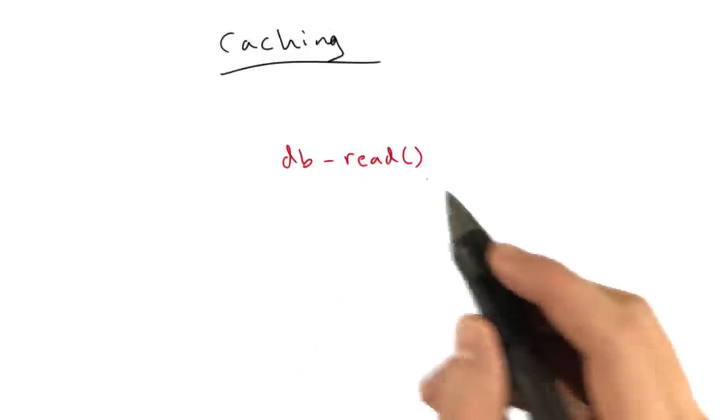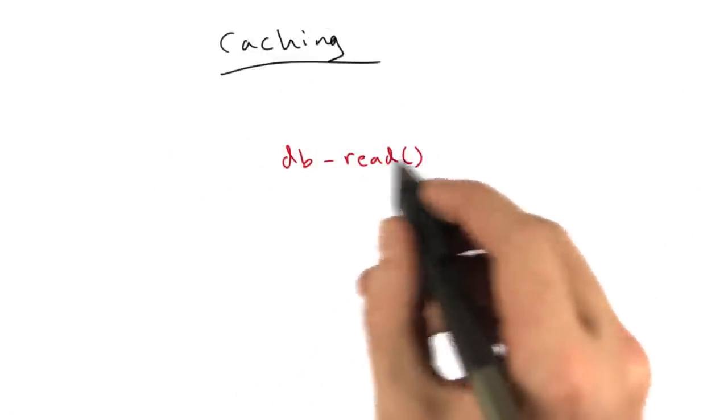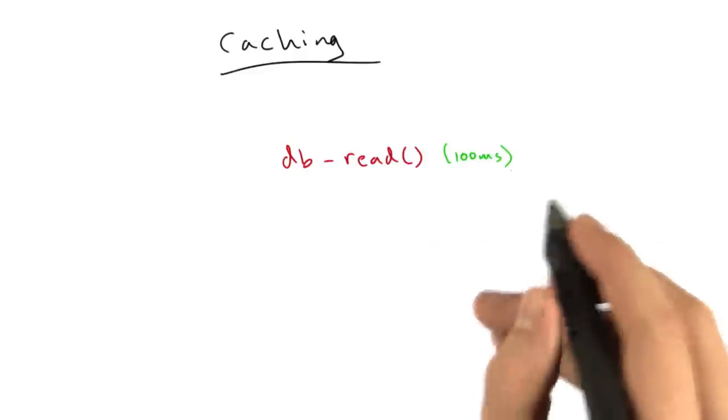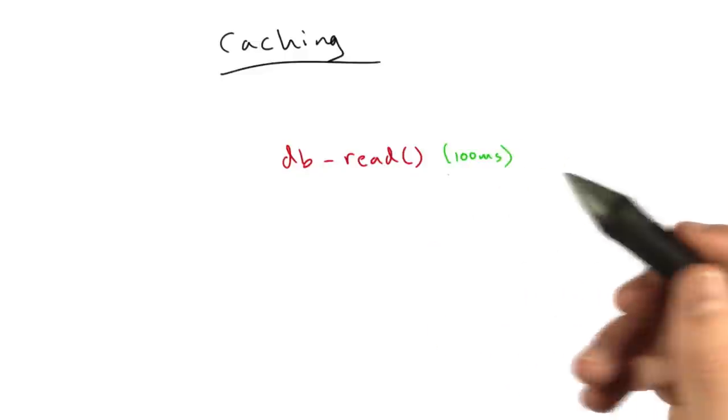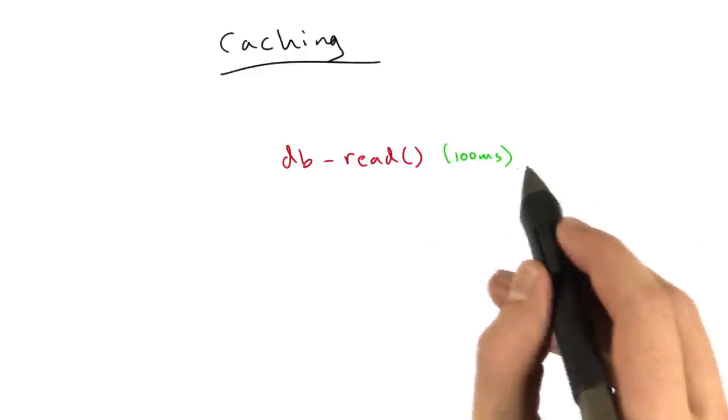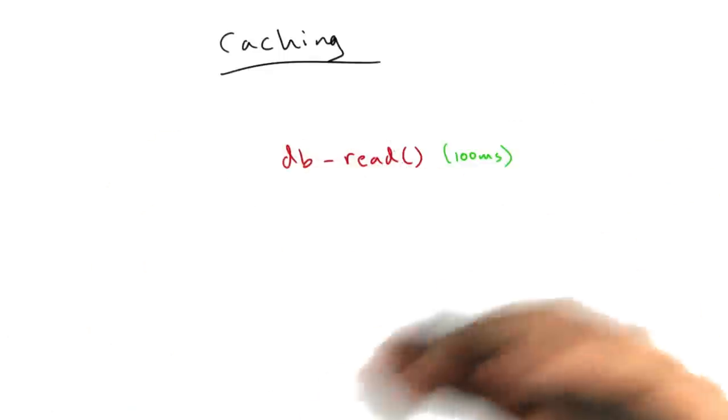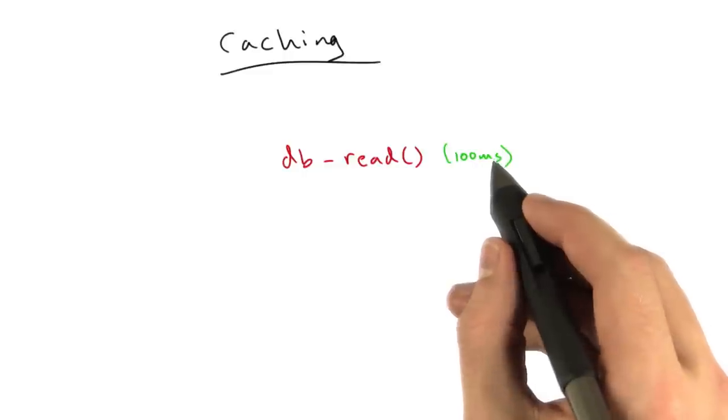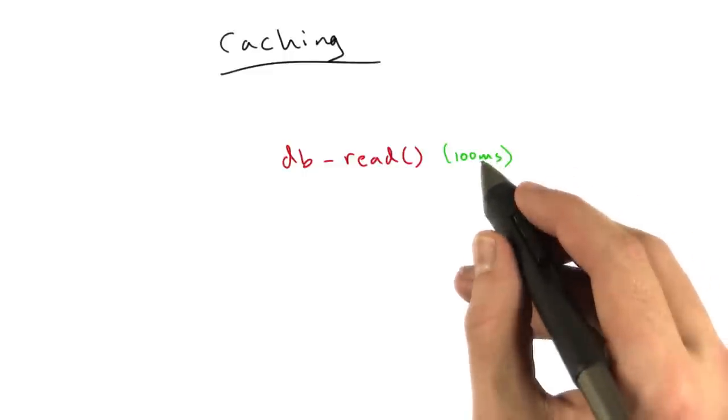Let's say we have a function called db_read, and this reads from the database. And it's slow. Let's say it takes 100 milliseconds to run this query, which is slow for a database query but not unheard of. And you're serving thousands of requests. If every request that comes in to your website has to hit db_read and that takes 100 milliseconds, that means you can only do 10 requests a second.